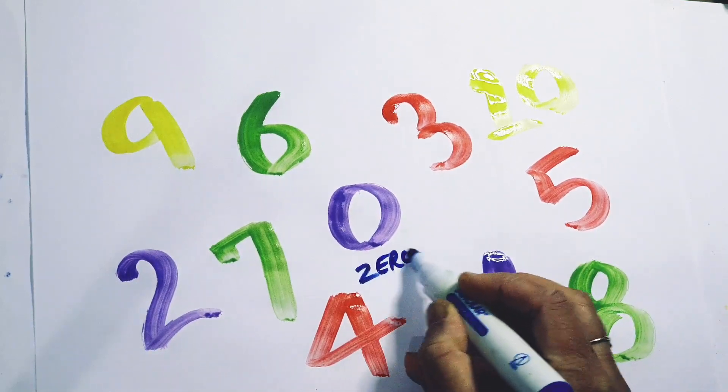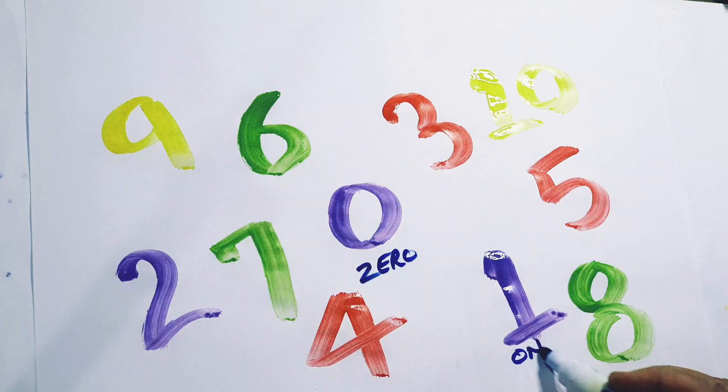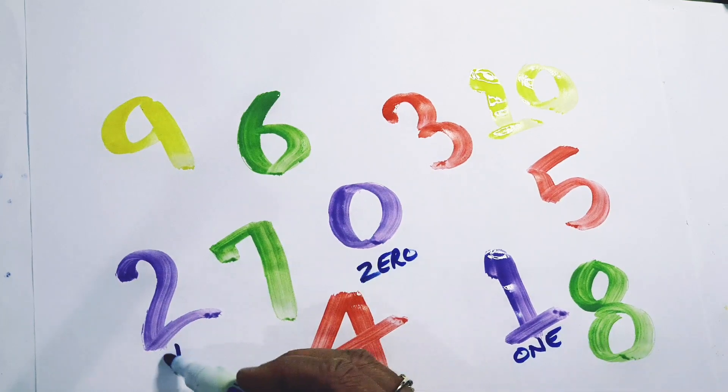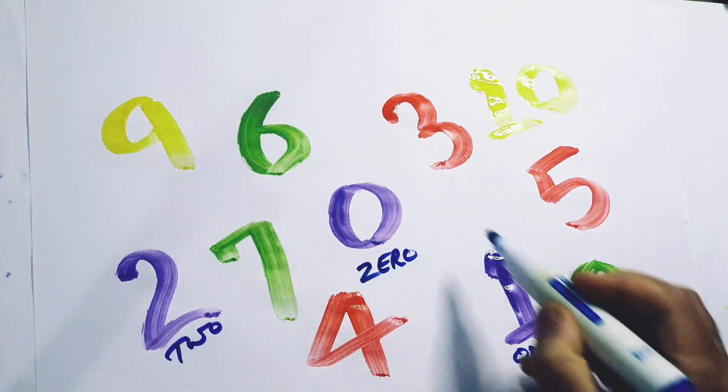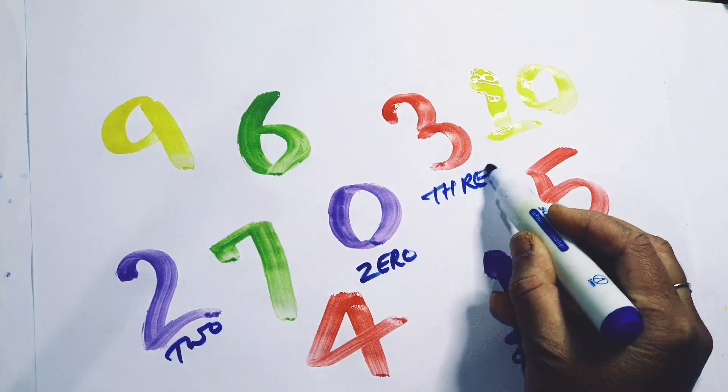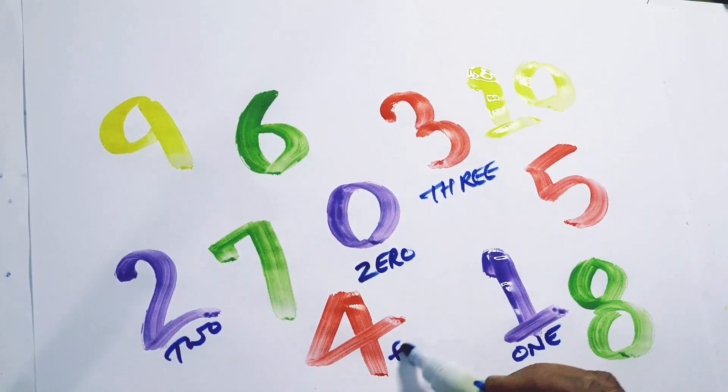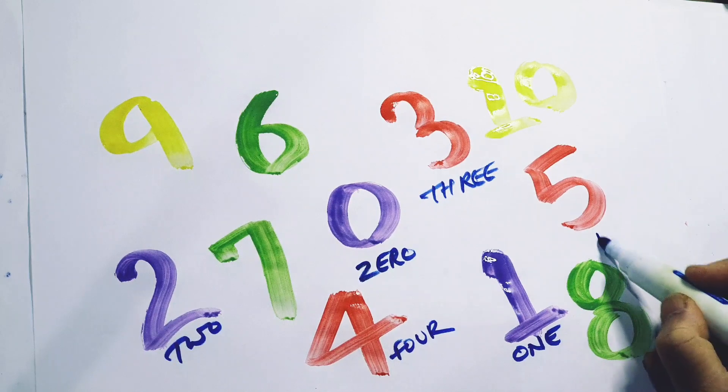Z-E-R-O, zero. O-N-E, one. T-W-O, two. T-H-R-E-E, three. F-O-U-R, four.